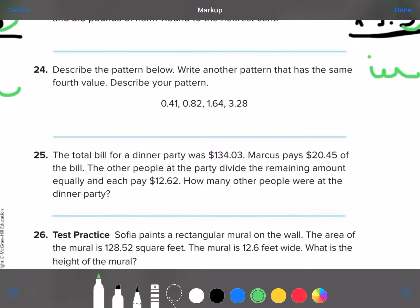Okay. Number 24. Let's give you a little help with this one. Describe the pattern below. Write another pattern that has the same fourth value. Describe your pattern. Ooh. Okay. So, I'm looking at this. And, 41 is half of 82. 82 is half of 164. So, I'm saying the pattern is multiplying by 2. So, see if you can figure out the pattern.